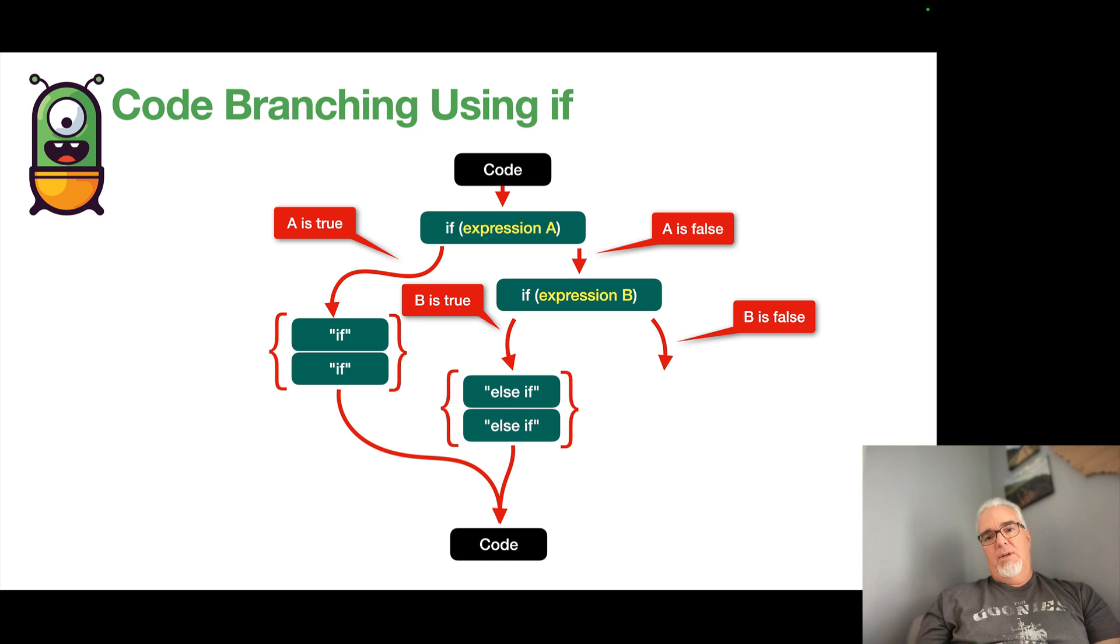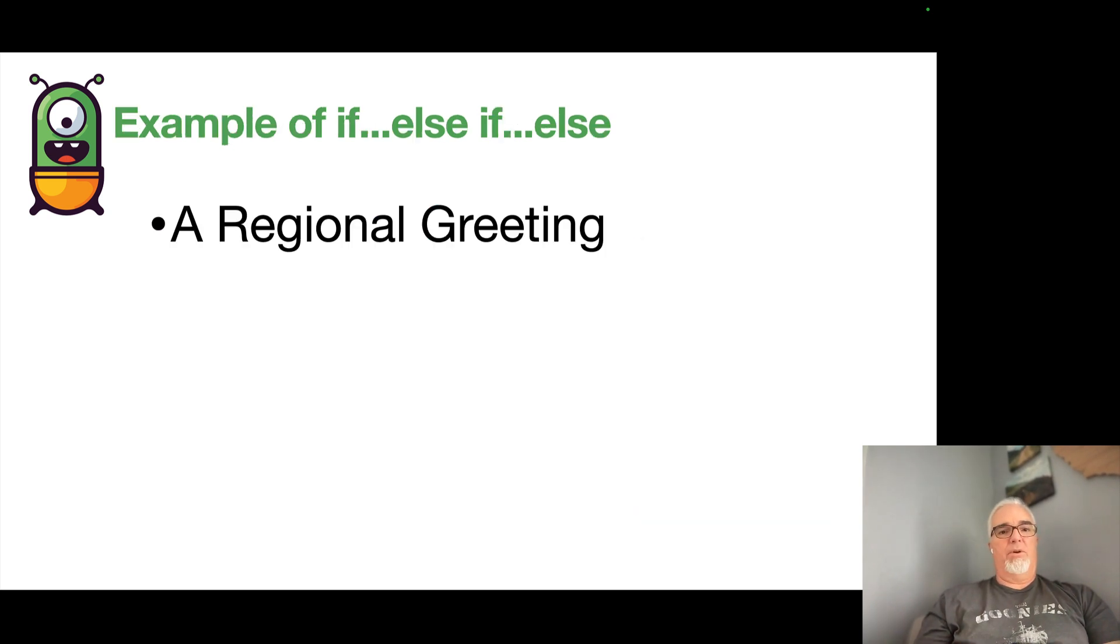and B is false, then we must do the else. Okay, so that's starting to look a little crazy there with the diagram. Let's take a look at this in actual code.